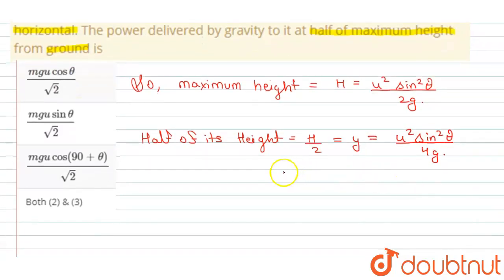So the vertical component of initial velocity will be the vertical component of initial velocity.